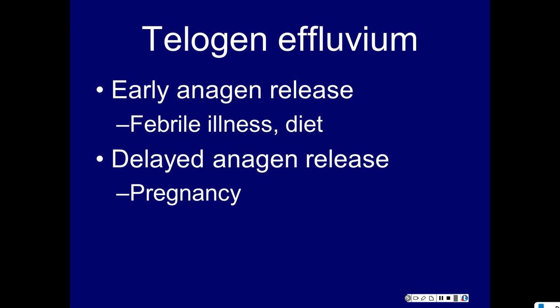Telogen effluvium: the classic form is surgery or crash diet three to five months ago. Terry Heddington named the subtypes. Anagen is supposed to last three to five years, telogen three to five months, catagen about three weeks — roughly a thousand days, a hundred days, ten days. Early anagen release is a confusing name; all forms involve telogen hairs coming out of the scalp.